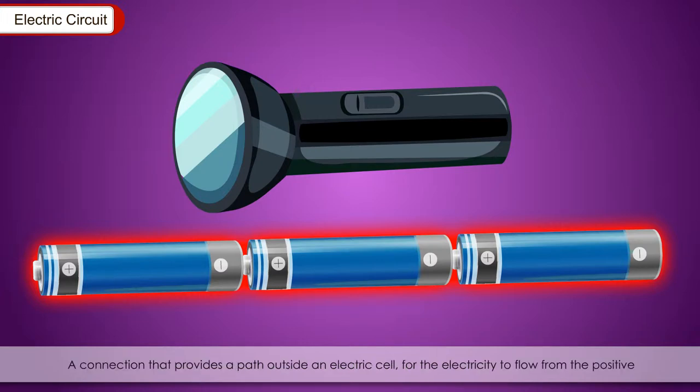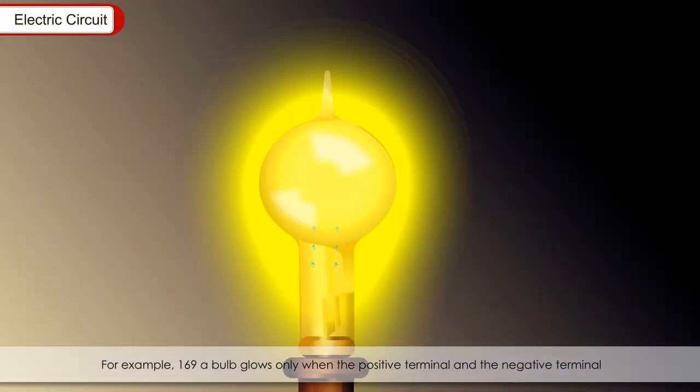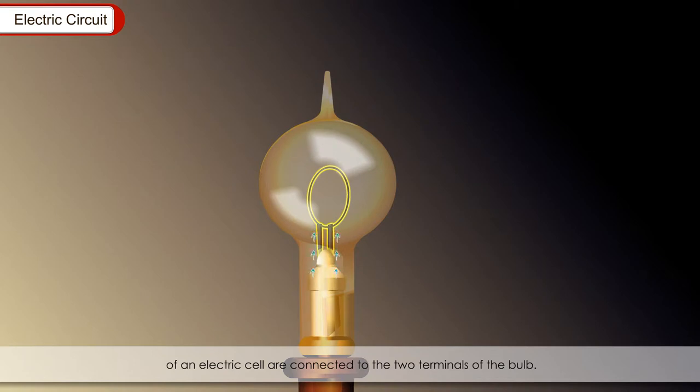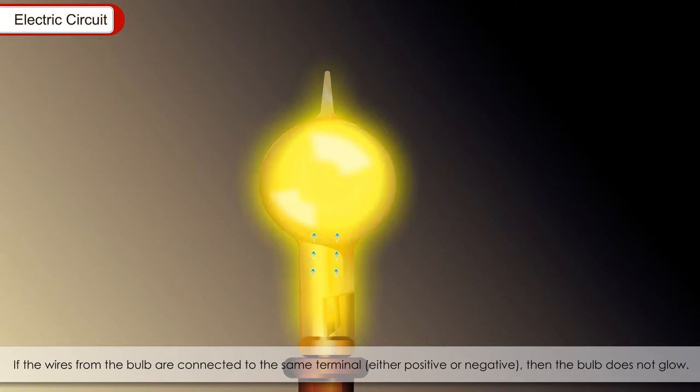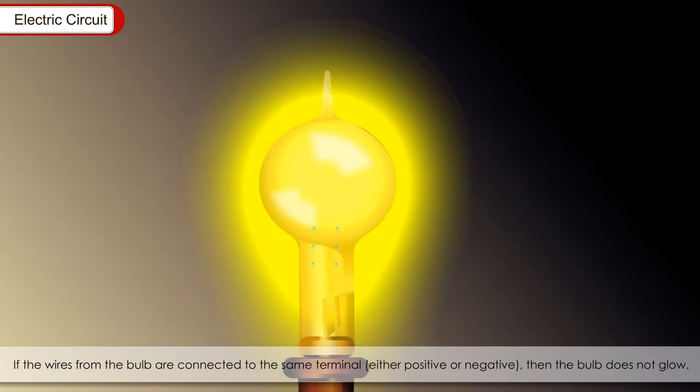A connection that provides a path outside an electric cell for the electricity to flow from the positive terminal to the negative terminal of the cell is called an electric circuit. For example, a bulb glows only when the positive terminal and the negative terminal of an electric cell are connected to the two terminals of the bulb. If the wires from the bulb are connected to the same terminal, either positive or negative, then the bulb does not glow.